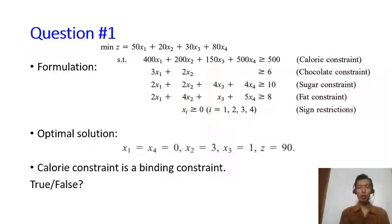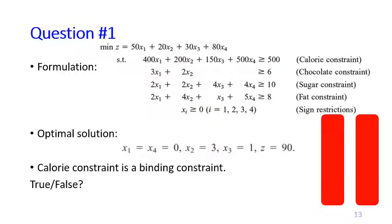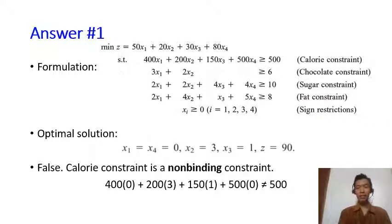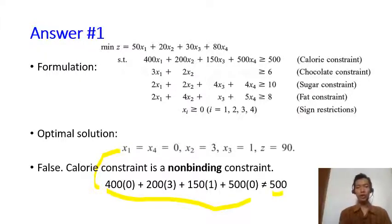Let me give you some questions to check your understanding. Given the formulation of the diet problem and the optimal solution, there is a statement saying the calorie constraint is a binding constraint — is it true or false? The answer is false. If you plug in the optimal solution into the calorie constraint, the left-hand side does not equal the right-hand side; therefore the calorie constraint is a non-binding constraint.